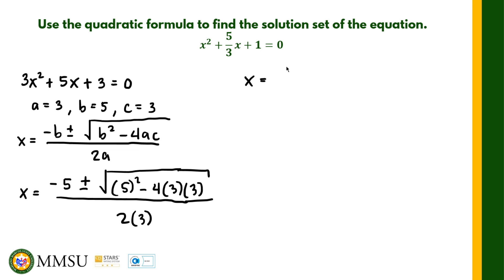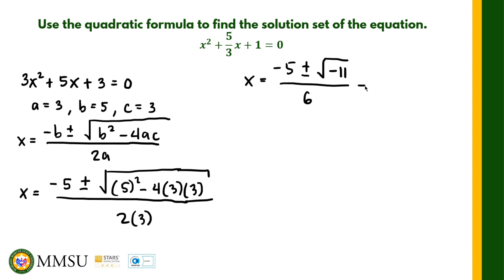So x equals negative 5 plus or minus the square root of 25 minus 36, which is negative 11. That gives us the square root of negative 11, all over 6. As you can see, inside the radical sign we have a negative number, which means this is a complex number. We can write this further as negative 5 plus or minus i times the square root of 11, all over 6.